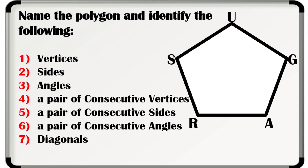For your drill, name the polygon and identify the following: Number one, vertices. Number two, sides. Number three, angles. Number four, a pair of consecutive vertices. Number five, a pair of consecutive sides. Number six, a pair of consecutive angles. And number seven, the diagonals.